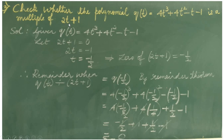By finding the remainder when q of t is divided by 2t plus 1, we can identify whether q of t is a multiple of 2t plus 1. The given q of t equals 4t cube plus 4t square minus t minus 1. Let 2t plus 1 equal to 0. Then 2t equals minus 1, so t equals minus 1 by 2. This implies the zero of 2t plus 1 is equal to minus 1 by 2.